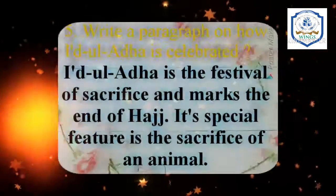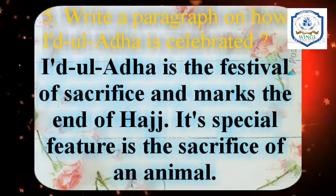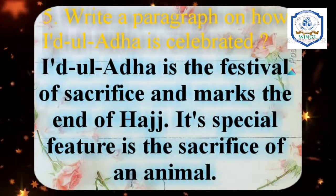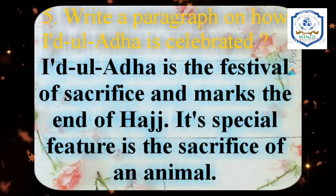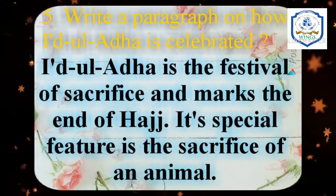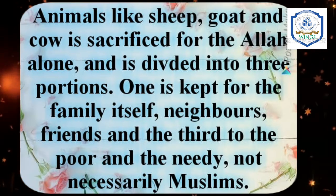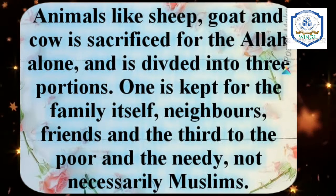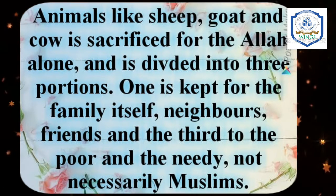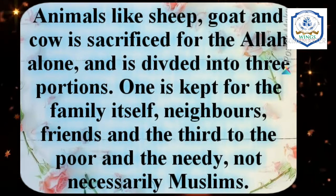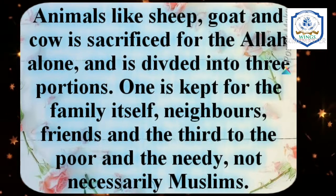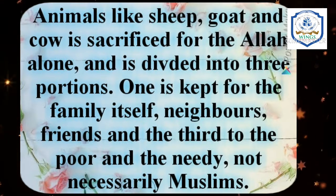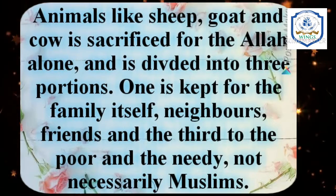The fifth question is: write a paragraph on how Idul Adha is celebrated. The answer is: Idul Adha is a festival of sacrifice and marks the end of Hajj. Its special feature is the sacrifice of an animal. Animals like sheep, goat, and cow are sacrificed for Allah alone and divided into 3 portions — one kept for the family, one given to relatives, neighbours, and friends, and the third to the poor and needy, not necessarily Muslims.